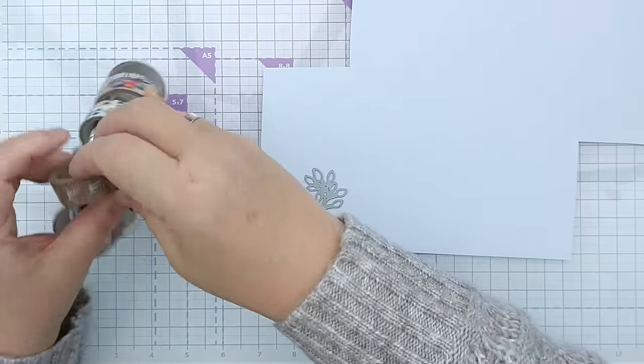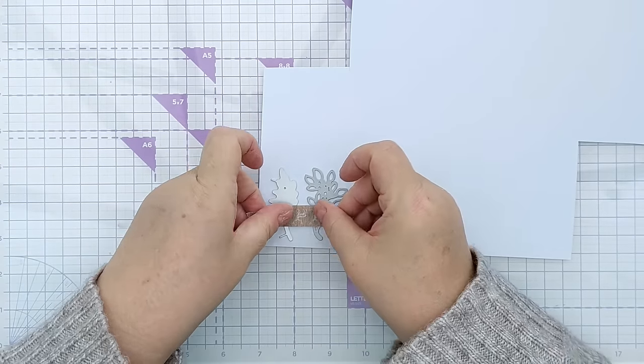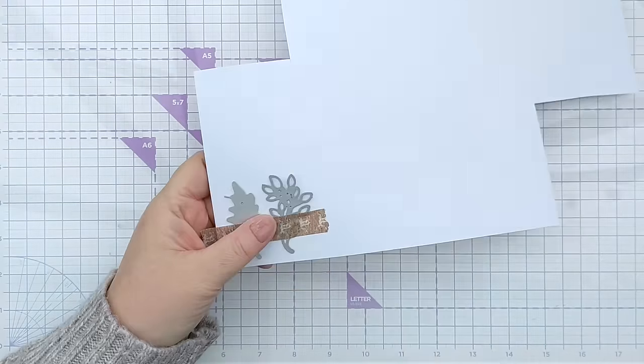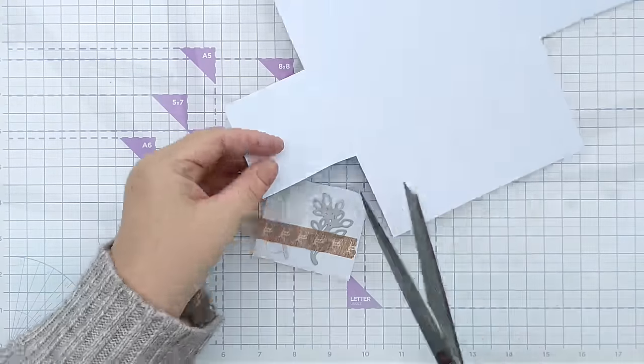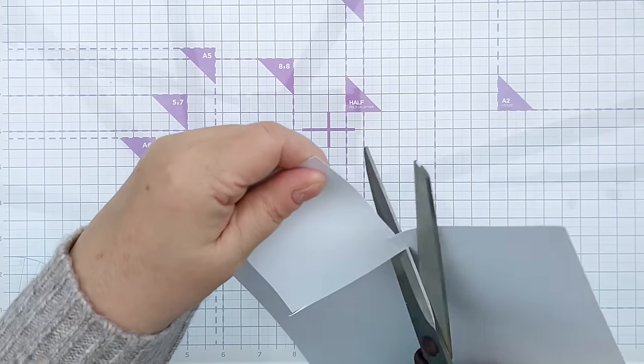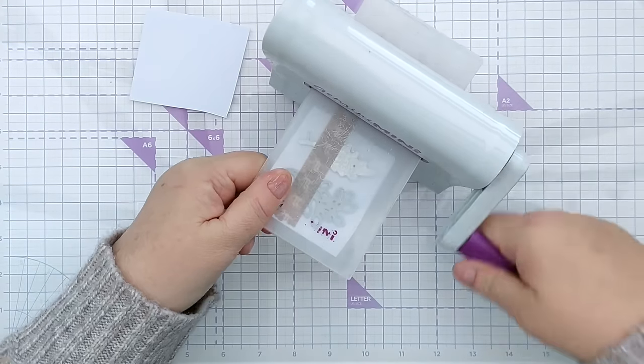Speaking of fiddly die cuts, I took my two leafy branchy dies and die cut two of each from smooth white cardstock. I taped down my dies to stop them slipping around and then ran them through my Gemini mini die cutting machine.